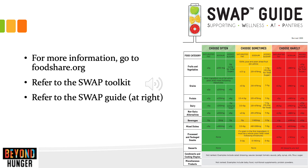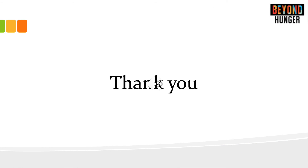For more information, go to foodshare.org. When you are there, look for the SWAP Toolkit. And when you are ranking food, be sure to refer to the SWAP Guide, which is pictured on the right side of the slide. Thank you for listening, and I hope this has helped you.